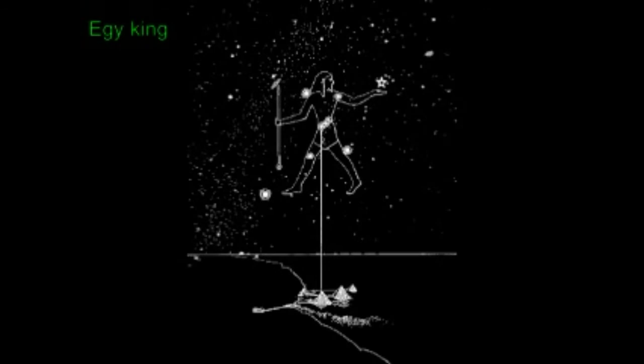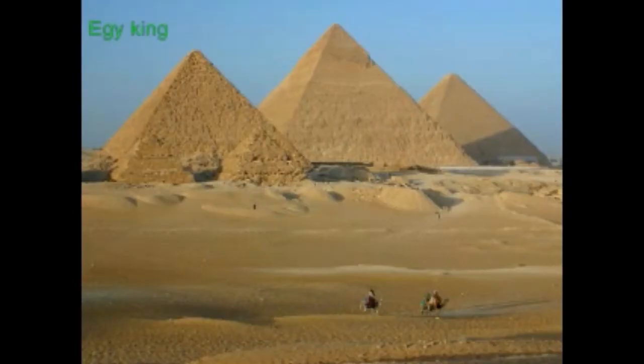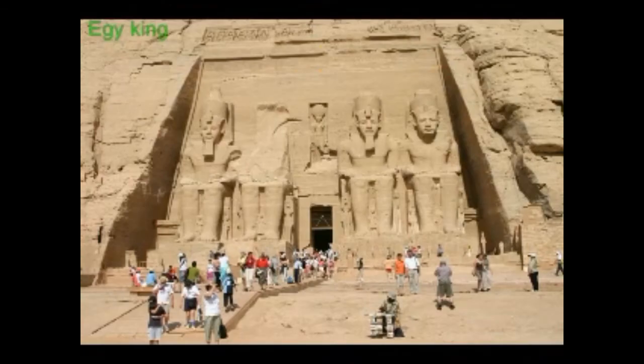The skies of ancient Egypt were always clear, so measuring the passing hours was easy. During the day they used a sundial, and at night they used the stars. Later, the Egyptians used water clocks to tell time more accurately than they could with a sundial or the stars.